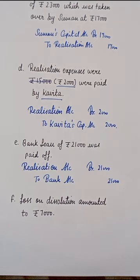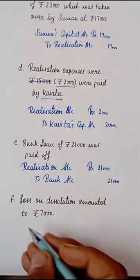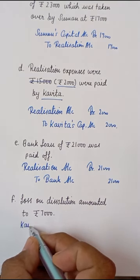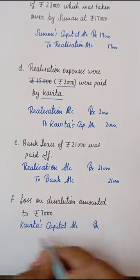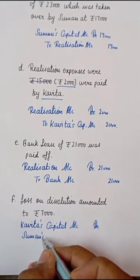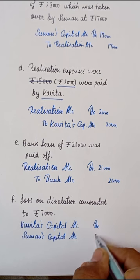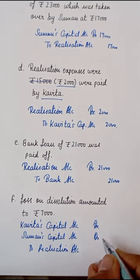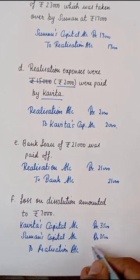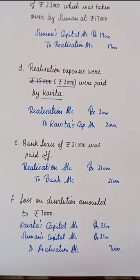छठा transaction: Loss on dissolution amounted to Rs.7,000। ये dissolution का loss है जिसे हमें partners में distribute करना है उनके old ratio में। Kavitha और Suman का old ratio equal है, तो इस loss को equally बाँटना पड़ेगा। Journal entry बनेगी: Kavitha's Capital Account Debit, Suman's Capital Account Debit to Realization Account। Loss जब partners में distribute किया जाता है तो उनकी capital decrease हो जाती है, इसलिए वो debit होते हैं और Realization Account credit हो जाता है।